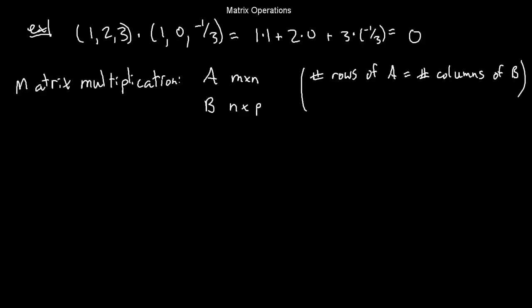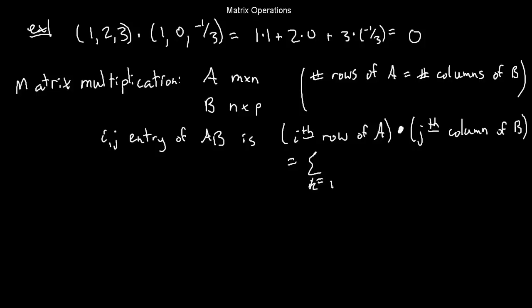The ijth entry of A times B, that's the ith row and the jth column. Well, what you do is you just take the ith row of A dot product with the jth column of B. You can write that as a formula. If you check this, you can check this fairly easily. You just take the summation from K goes from 1 to N of AIK times BKJ. That's the formula for the dot product.